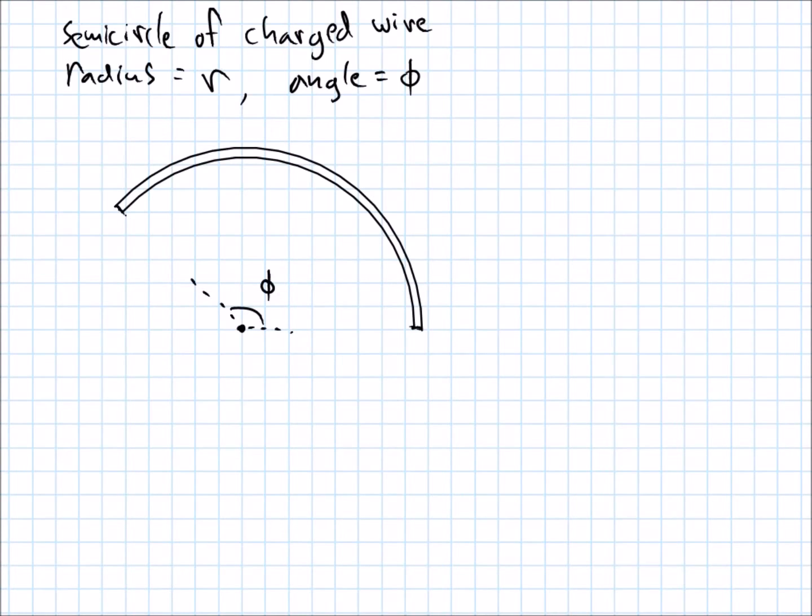of radius r and angle of phi is what I mean by that. All right, so we've bent this charged wire into this shape, and I want to find what the electric field is right here at the center of curvature, right at this point I'm marked. Okay, so we need the electric field there.